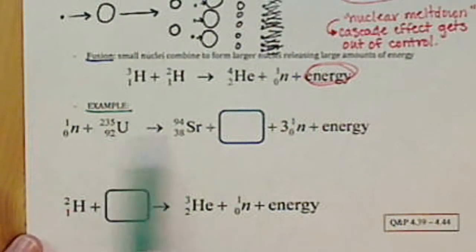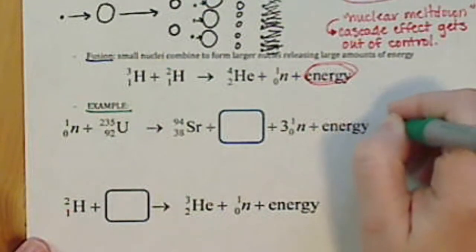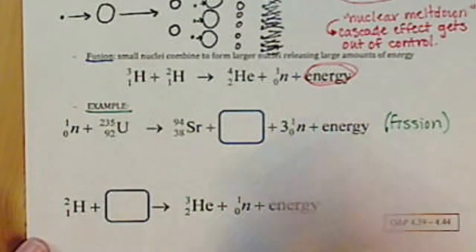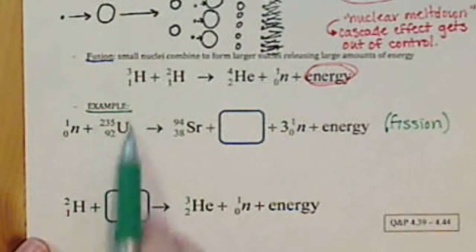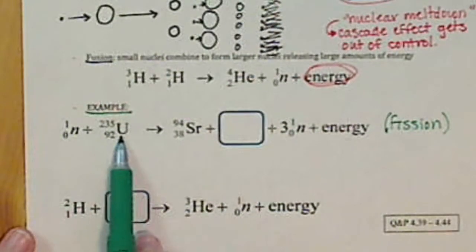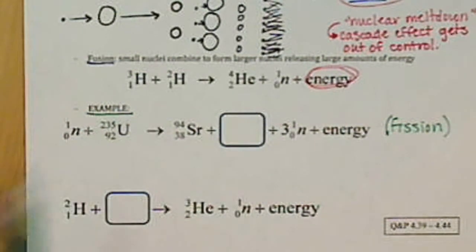So this first example here, this is a fission example. And we know that because we're dealing with a very massive element here. Again, fission is usually worked with uranium isotopes. So we have to figure out our top number and our bottom number.